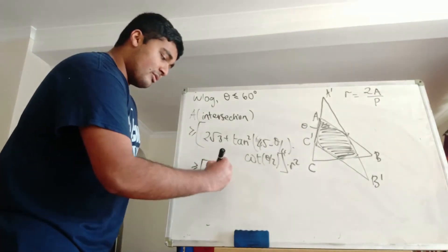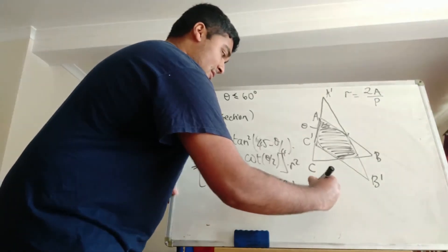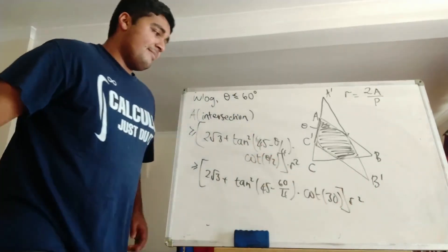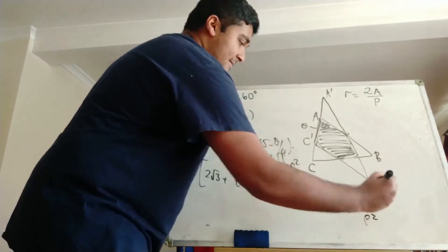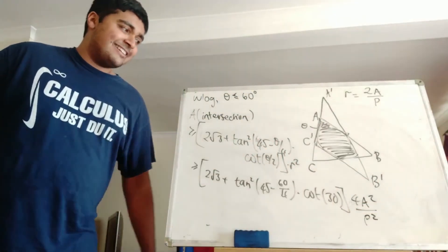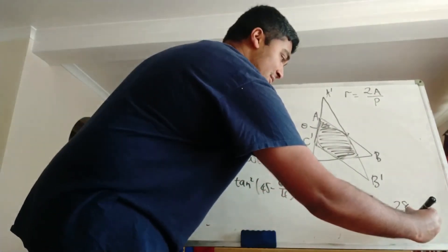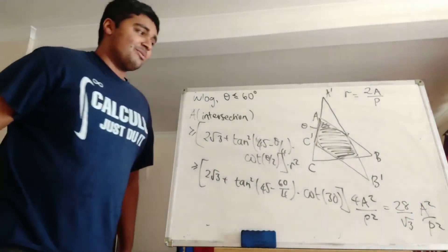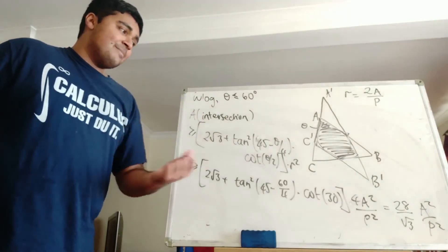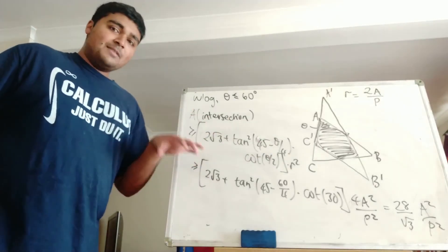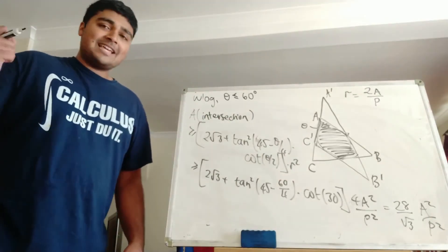Plugging in theta equals 60 degrees, we get 2√3 + tan²(45 − 60/4)·cot(30), all times r squared. We know r = 2A/P, so r² = 4A²/P². Using standard trigonometric values, this expression precisely equals 28 over root 3 times A squared over P squared. So we've shown the area of intersection is at least 28/√3 · A²/P², which is the result we want.